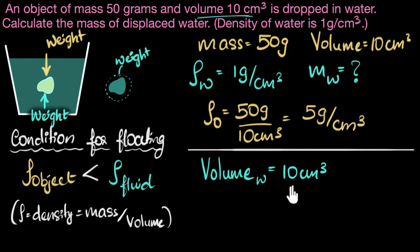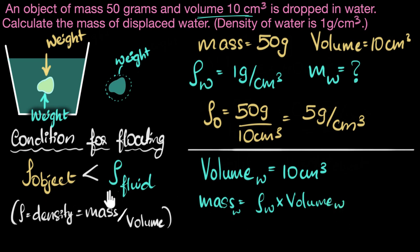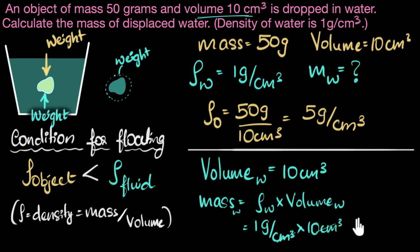Now I know the volume and I know the density of the water — can I calculate the mass? Yes. Density is mass divided by volume, so mass equals density times volume. Mass of the water equals density of water times volume of the water: one gram per cm cubed times 10 cm cubed. The cm cubed cancels out and we get 10 grams. So the mass of liquid displaced is 10 grams — smaller than the mass of the stone.